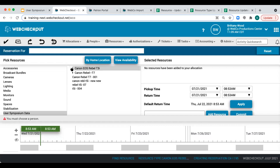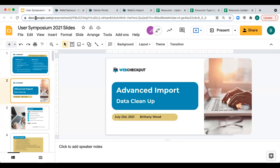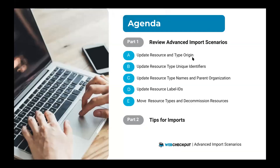To transform this data, we'll break these changes up into several import scenarios. We'll start by first updating the origin of our resources and resource types. Next, we'll update our resource type unique identifiers. After that, we'll focus on updating our resource type names and the organization of our parent and subtype structure. Once resource type updates are complete, we'll focus on updating our resources — first updating our resource label IDs, and then ensuring that all resources are assigned the correct resource type or decommissioned properly.